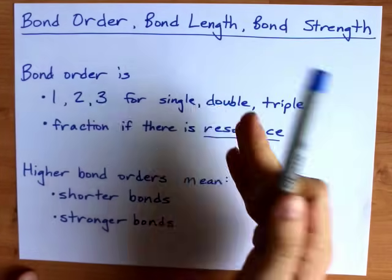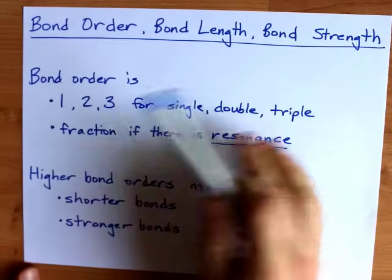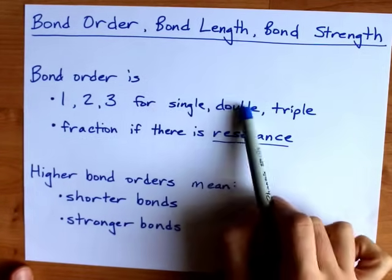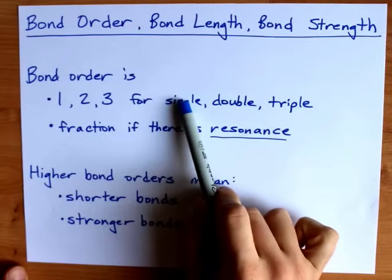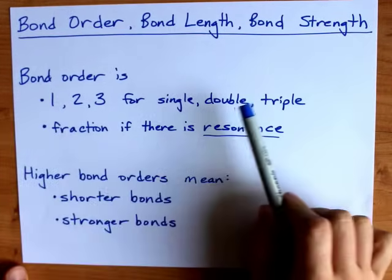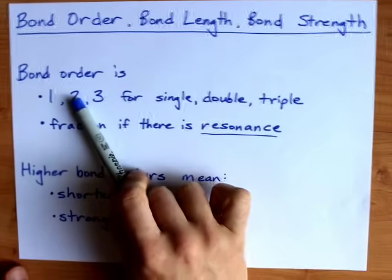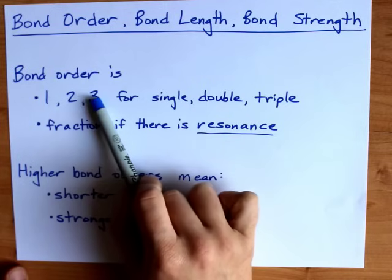Bond order is a very easy concept to understand for regular molecules that have single, double, and triple bonds. A single bond has a bond order of one, a double bond has a bond order of two, and a triple bond has a bond order of three.